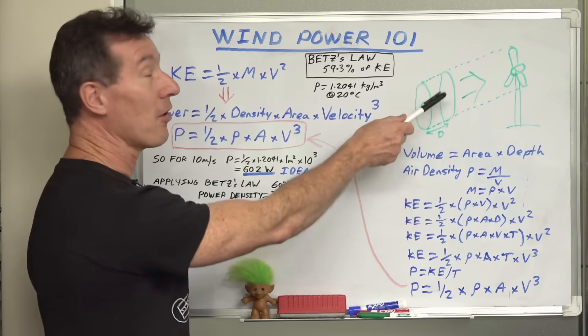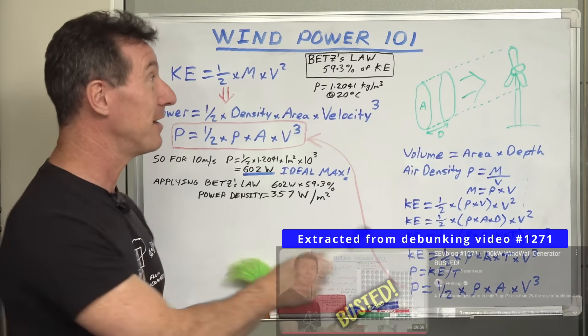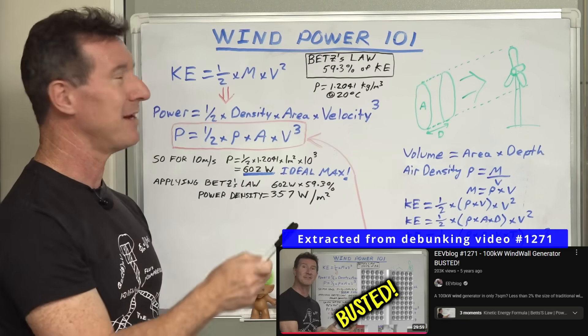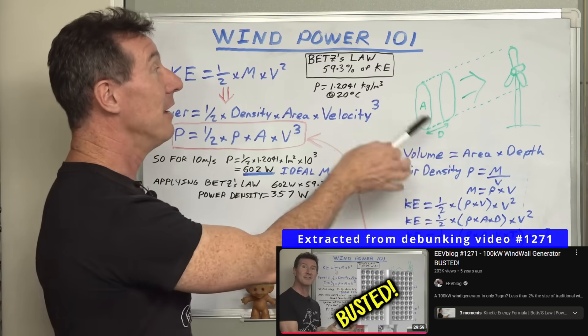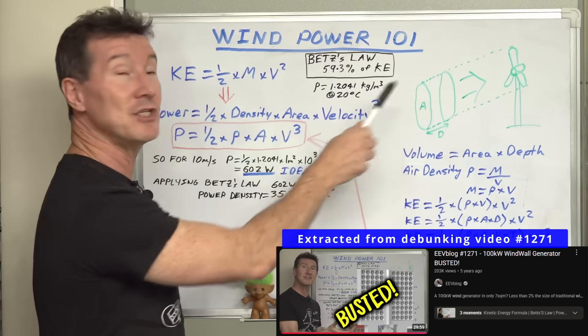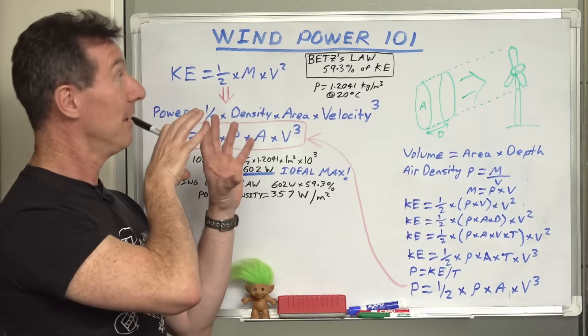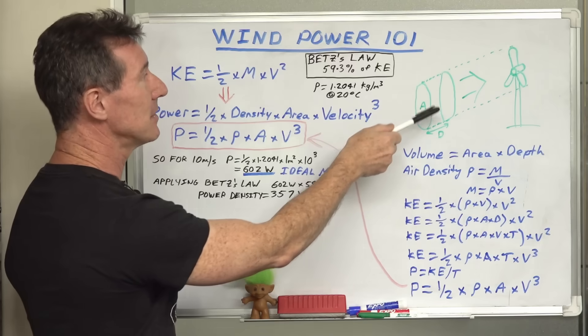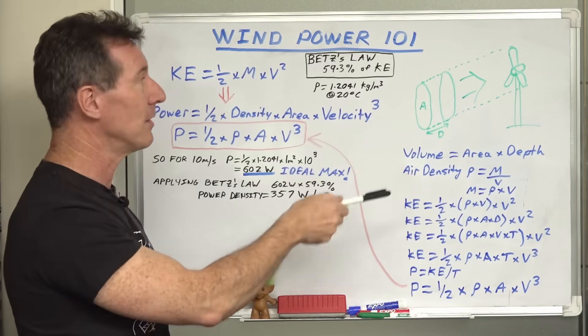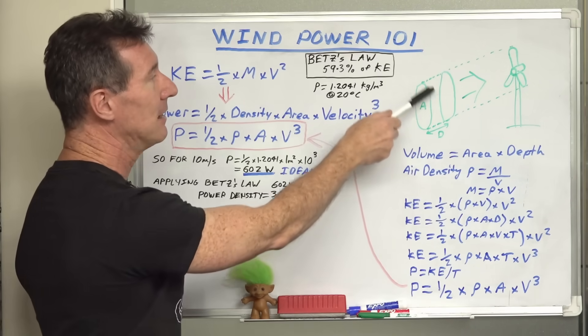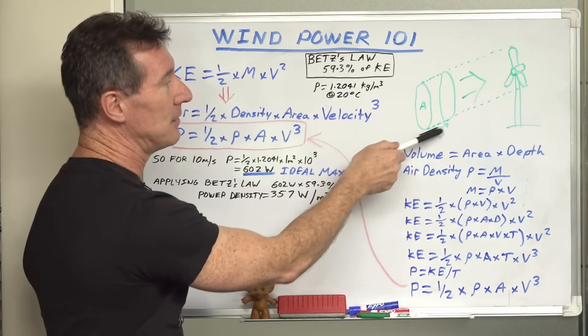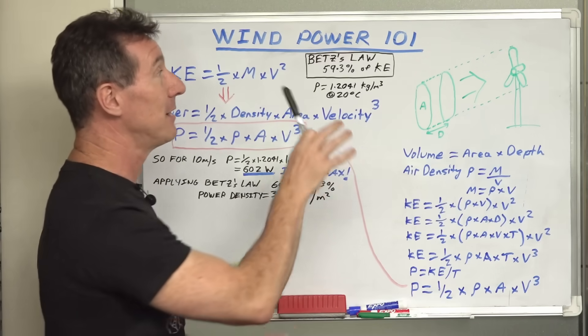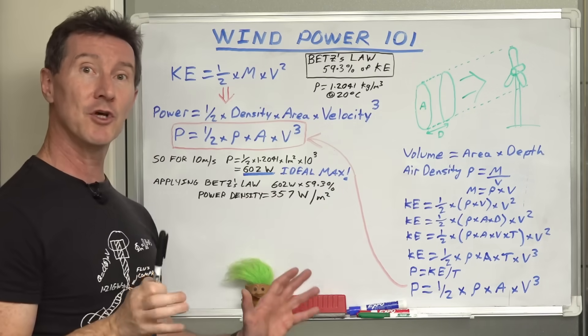Please excuse the crudity of the model. I didn't have time to build it to scale or paint it, but we've got a typical three-bladed wind turbine here. Doesn't matter how many blades. We're going to calculate the energy or the power in the wind that can go through a particular diameter wind turbine. In this particular case, I've drawn a circular volume of air here. We've got the area, and d is the distance, basically the thickness of the air there, assuming that passes through the wind turbine.